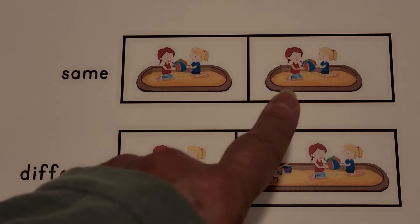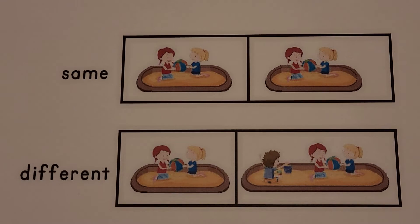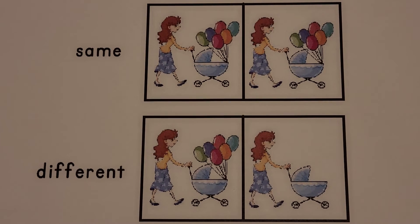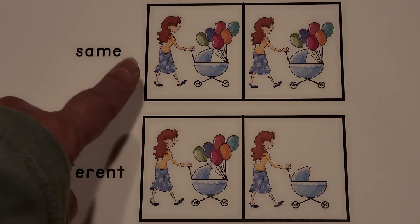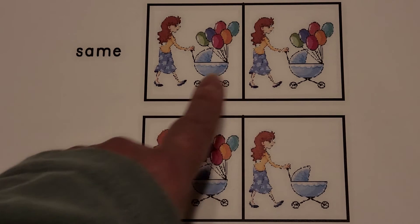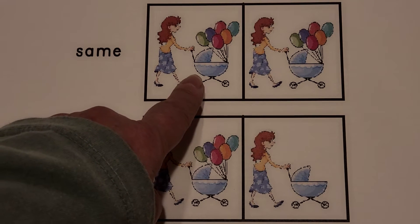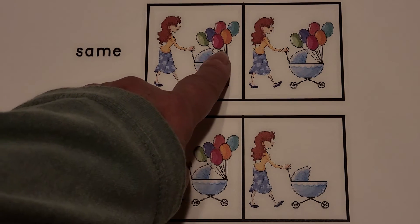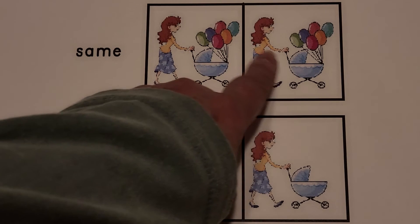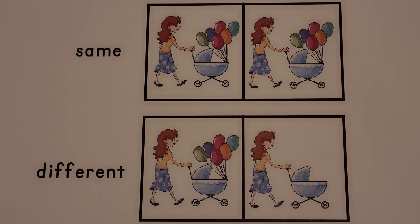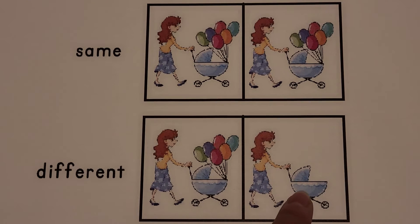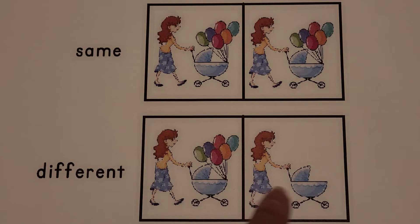These pictures are the same. There's a mother pushing a baby carriage with balloons tied to the front. These pictures are different because this one's missing balloons — there's no balloons in this picture. These are different.